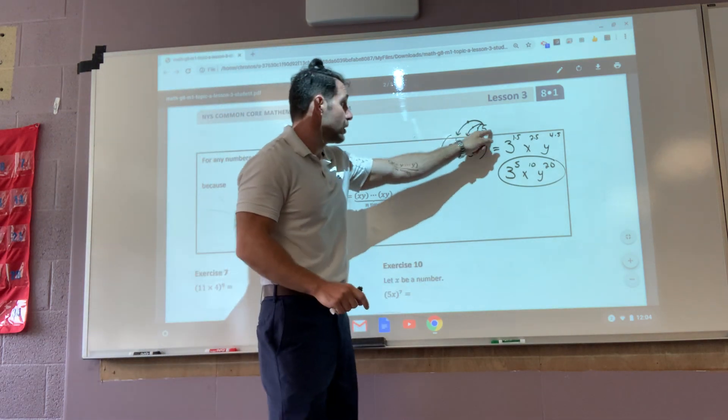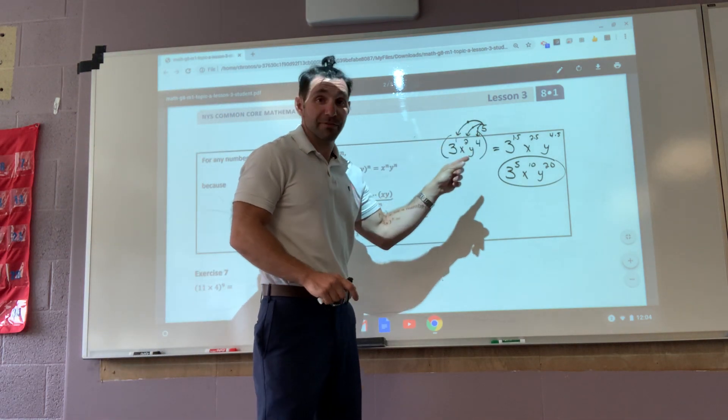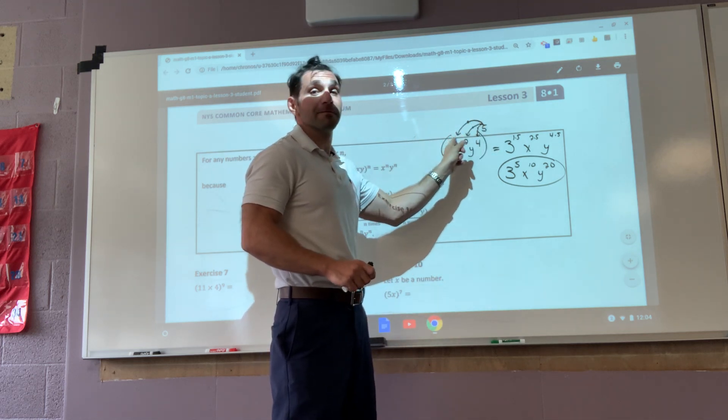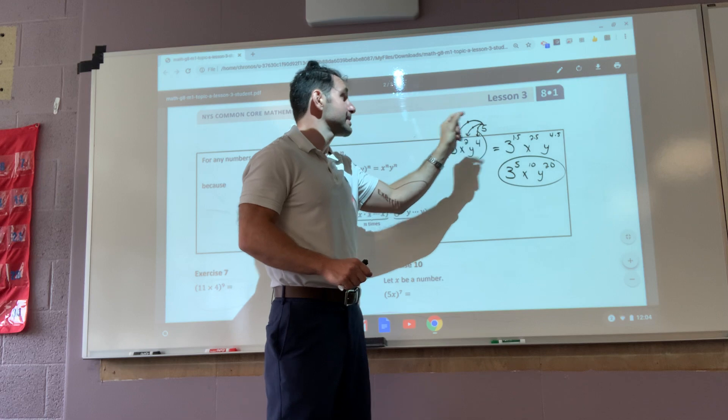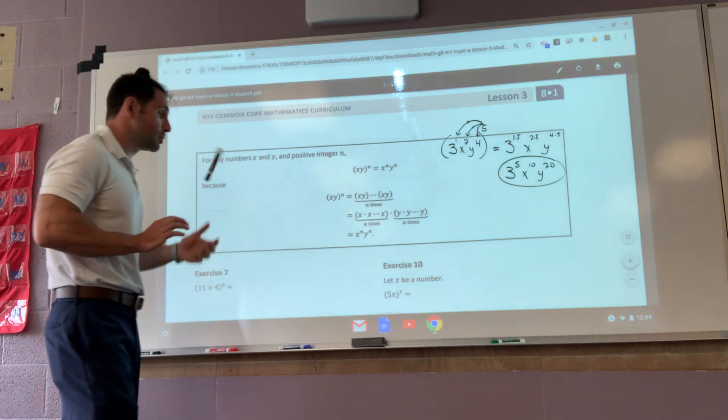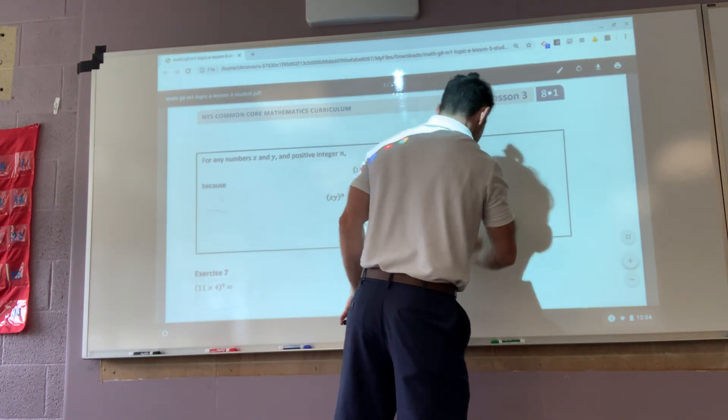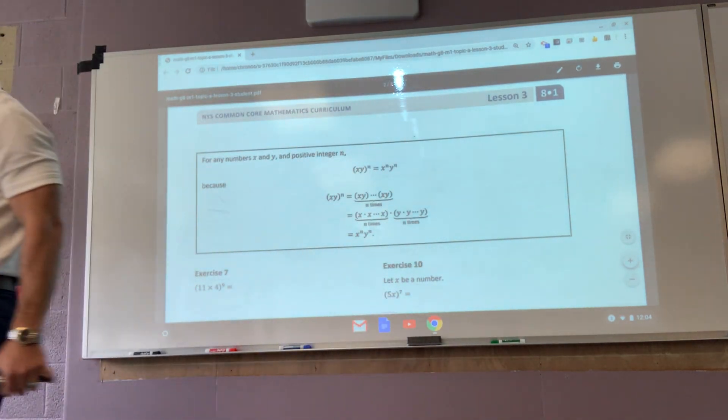You have to take this exponent and distribute it to every exponent. Not to the numbers. I didn't do three times five. That's not what I did. I did three to the five times the first power, five times the second power, five times the fourth power. We're only taking it to the powers. So how does this look for some examples? Well, let's find them.